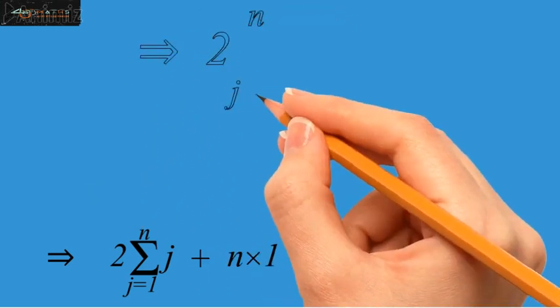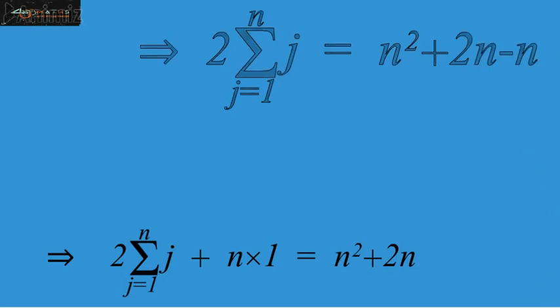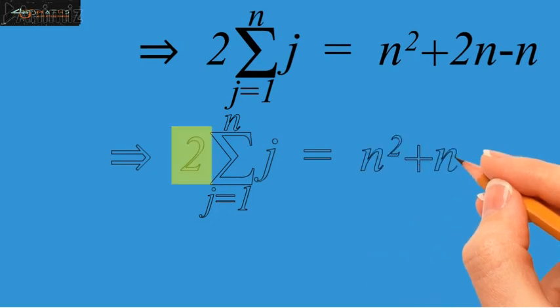Now, further simplifying, we have n squared plus 2n minus n, and which gives n squared plus n. Now, dividing each side by 2.